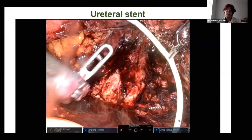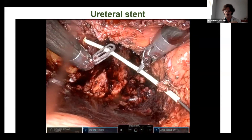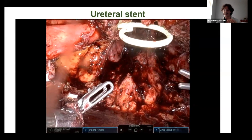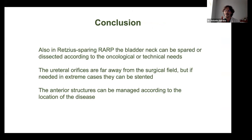Positioning the stent is not that difficult. If you cannot position the stent, it means the ureter is far — that's what we understood after almost 3,000 cases. In conclusion, also in the Ritz-Sperring approach, the bladder neck can be spared or dissected according to oncological and technical needs. Since the ureteral orifices are far from the surgical field, you may need in extreme cases to stent them — and you can do it. The anterior structures can be managed according to the location of the disease.